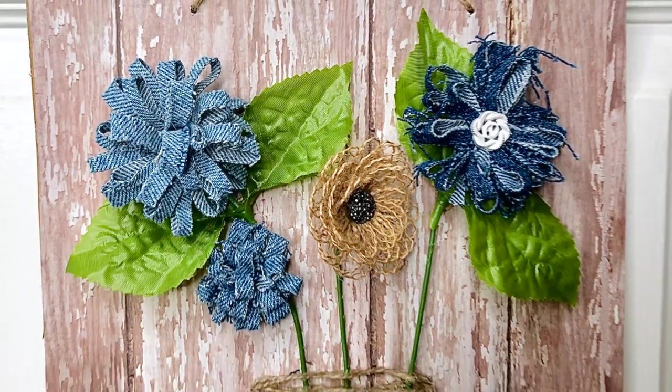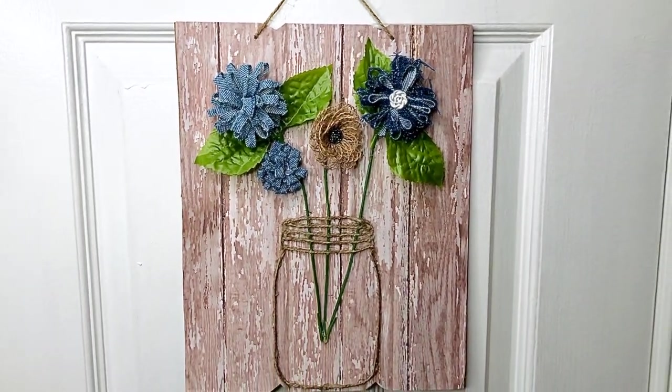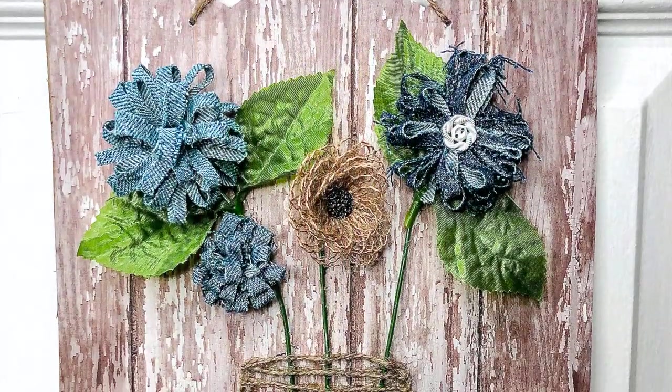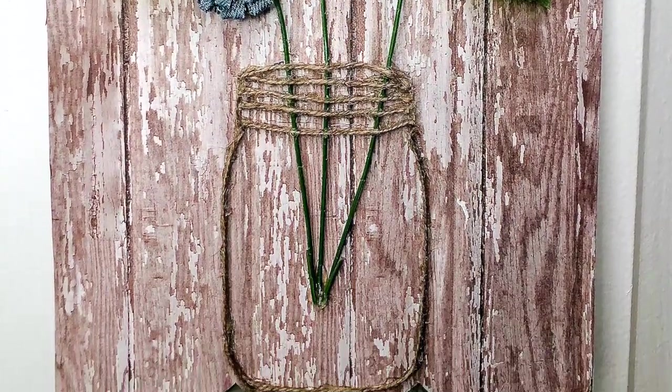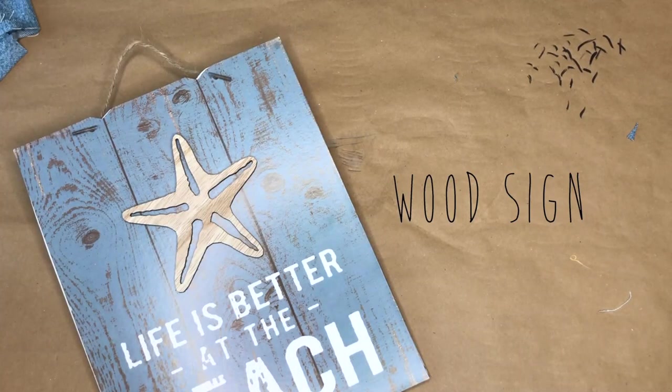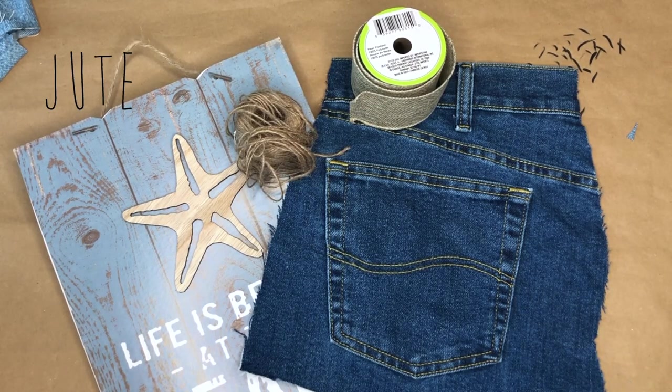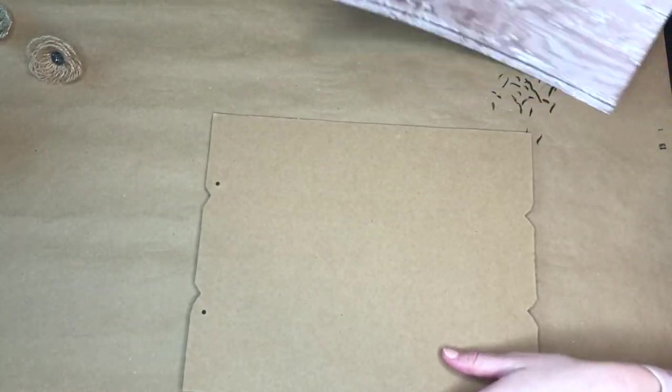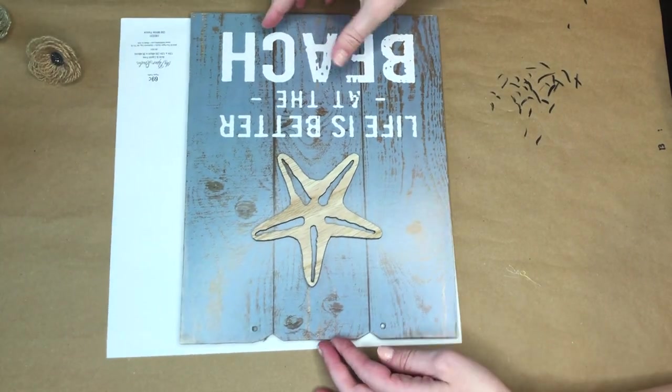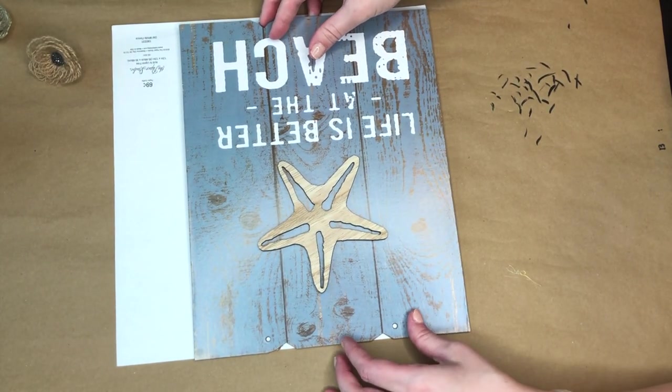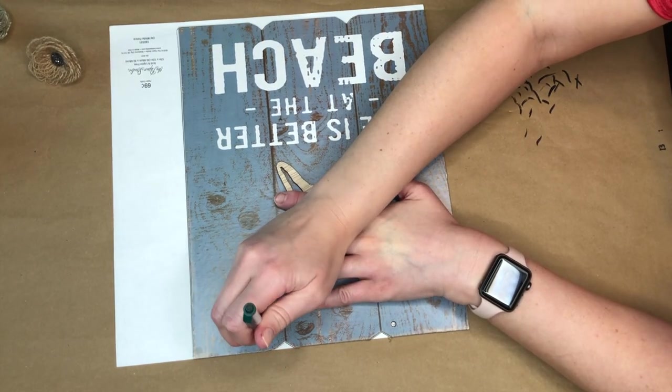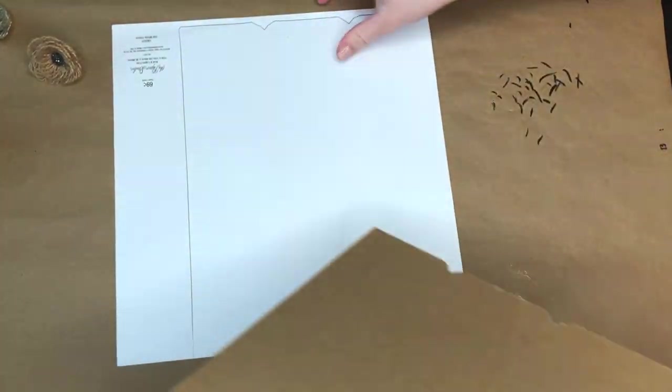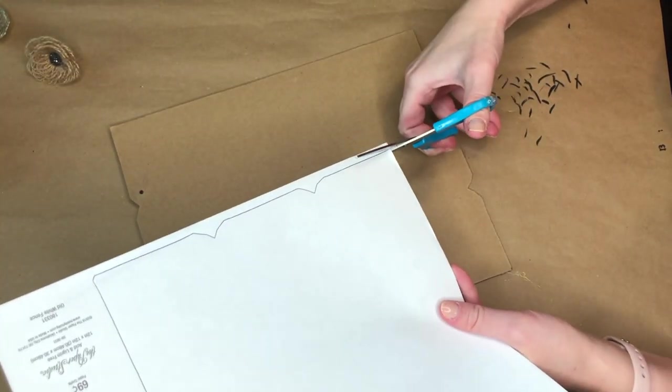The last DIY in today's video is a mason jar sign with some faux flowers that I made out of some old blue jeans. Here are the other supplies you'll need to make this. To start off, I am taking a sign from the Dollar Tree and it is one of their beach signs. You have to let me know in the comments down below if your Dollar Tree ever got any of the beach stuff. I got this at a Dollar Tree in Virginia, but it was still like four hours from the beach. So I'm not sure why we got beach things. But yeah, let me know if your Dollar Tree ever did.